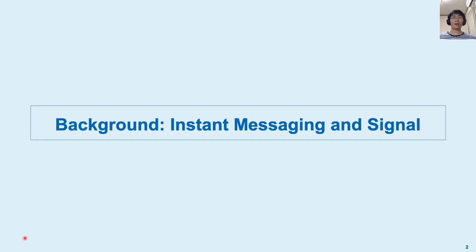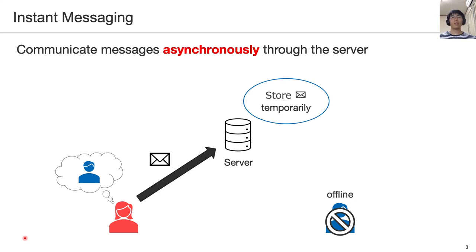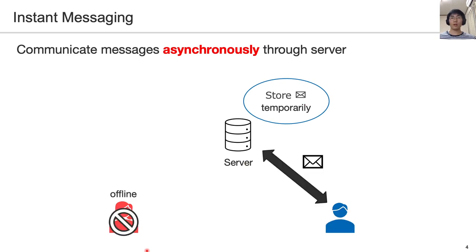I'd like to start by talking about the background: instant messaging and Signal. Recently, a lot of people use instant messaging to communicate with each other. In instant messaging, users send and receive messages asynchronously through the server. For example, when Alice wants to send a message to Bob, she sends the message to the server, and the server stores it. When Bob becomes online, he accesses the server and receives the message. In this way, we can send and receive messages even when the communication partner is offline.